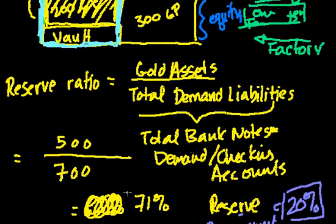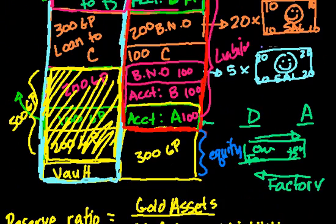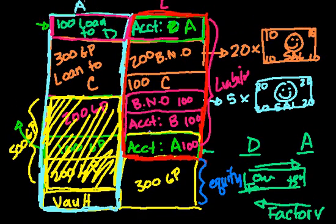Our bank as it is right now, it has a reserve ratio of 71%. So as long as no more than 71% of these people, because some of these loans might be out for a year or two, as long as in that year or two that these loans are out, as long as no more than 71% of these people don't come asking for their gold, we should be OK.